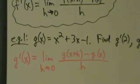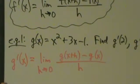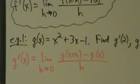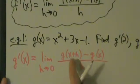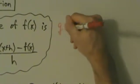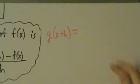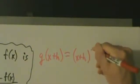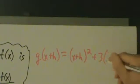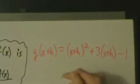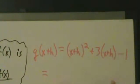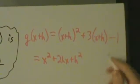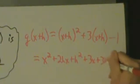So g'(x) equals the limit as h goes to 0 of g(x+h) minus g(x), all divided by h. Because we're working with x's and h's instead of actual numbers, things might be a little more messy algebraically, but we use the same techniques. First, let's figure out g(x+h). Since g(x) = x²+3x−1, g(x+h) is (x+h)² + 3(x+h) − 1. Expanding by FOILing (x+h)(x+h), we get x² + 2hx + h² + 3x + 3h − 1.